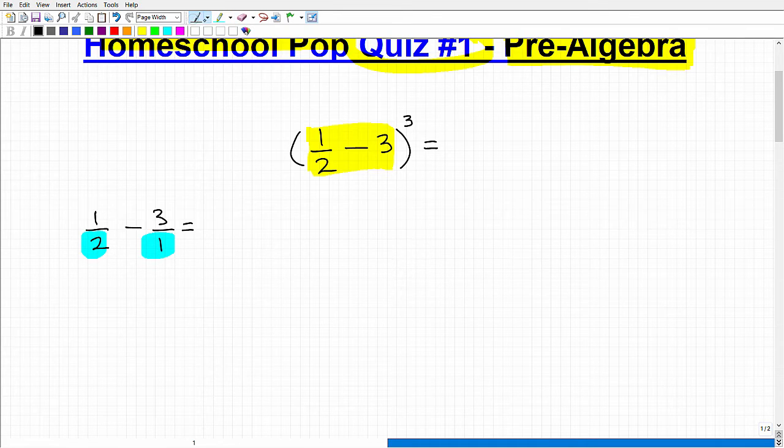One half minus three, but three is the same thing as three over one. I have some fractions here, but I'm going to have to find the lowest common denominator. The lowest common denominator is going to be two. I keep my fraction one half the same, and this fraction I have to multiply both the top and bottom by two, so this is the same thing as six over two.